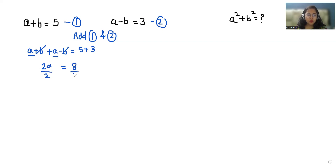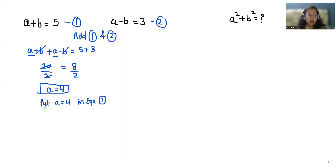Now I am going to divide both sides by 2. The value of a is 4. So put a equals 4 in equation number 1 to find out the value of b. So a plus b is 5; in place of a I will write 4. So 4 plus b equals 5, which gives b equals 5 minus 4. The value of b is 1.